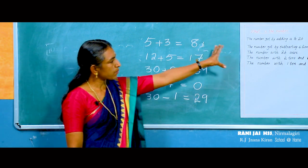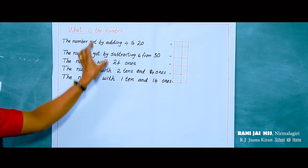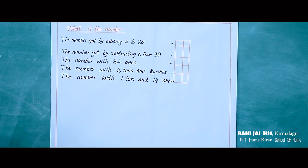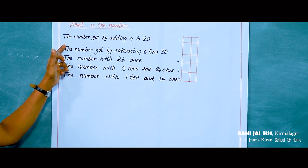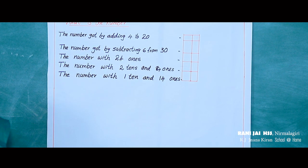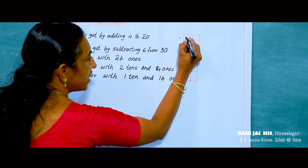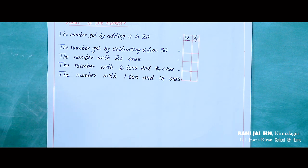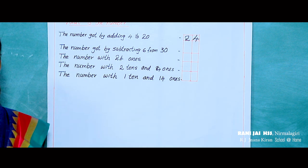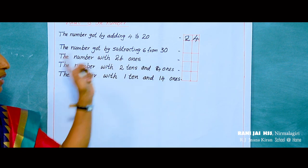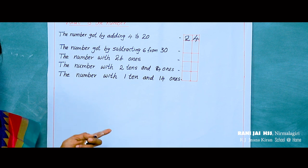Now we can observe some questions in this chart. Students, read the first question: a number got by adding 4 to 20. That means what is 20 plus 4? 20 plus 4 is equal to 24. Then the second question: the number got by subtracting 6 from 30, that means 30 minus 6. What is the answer? 24.